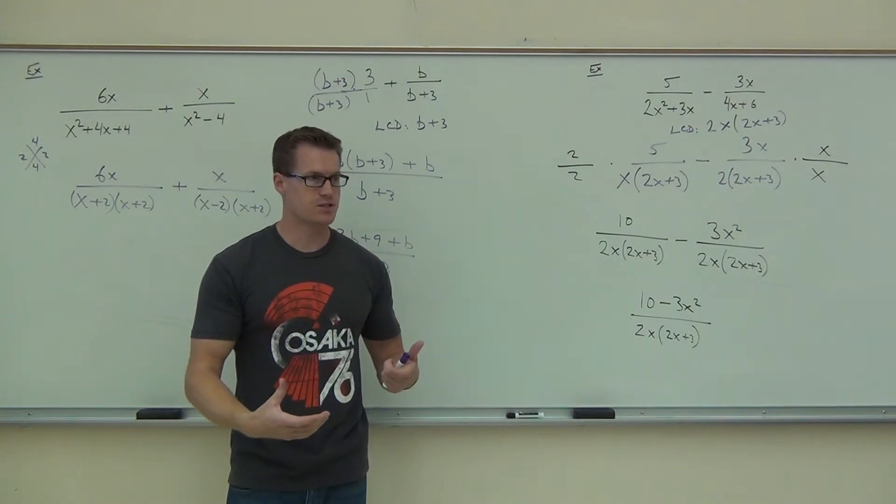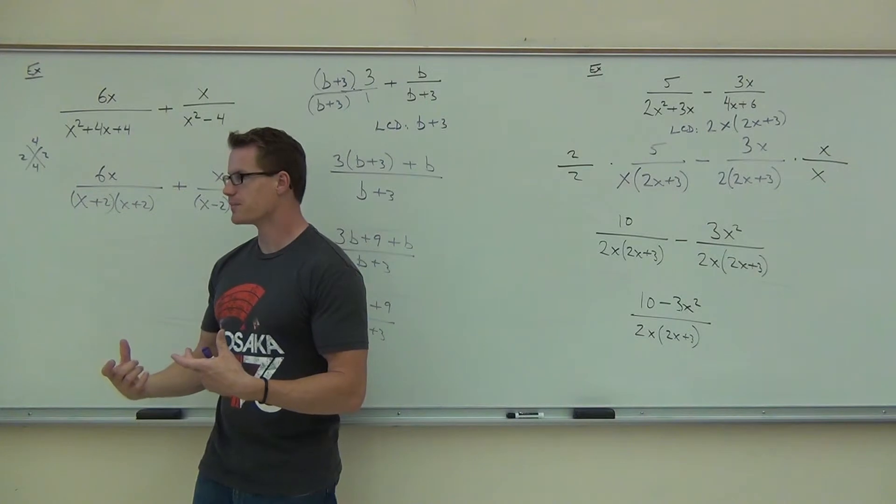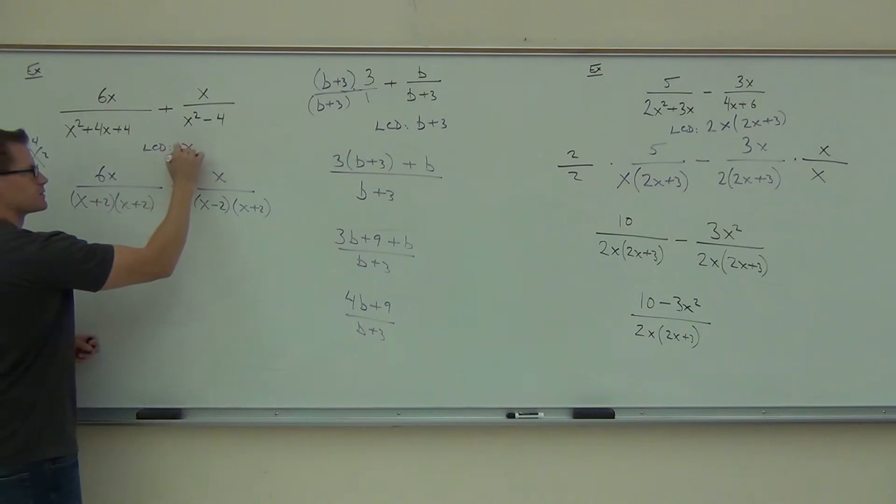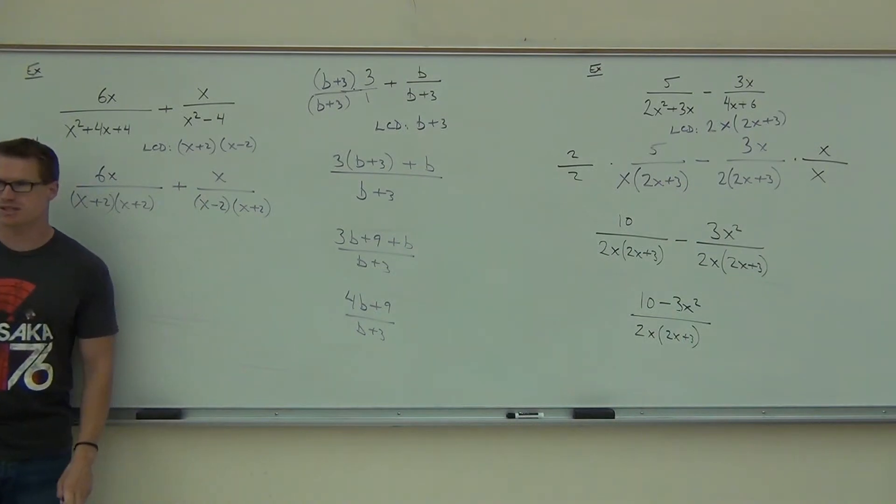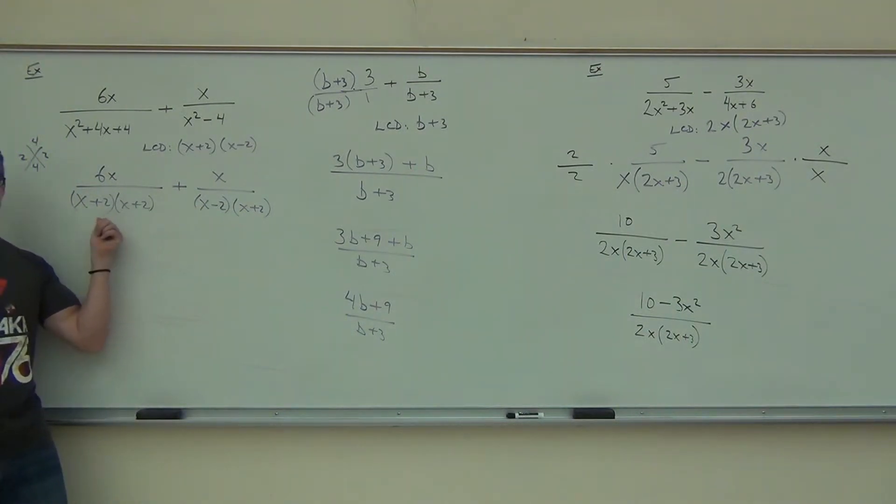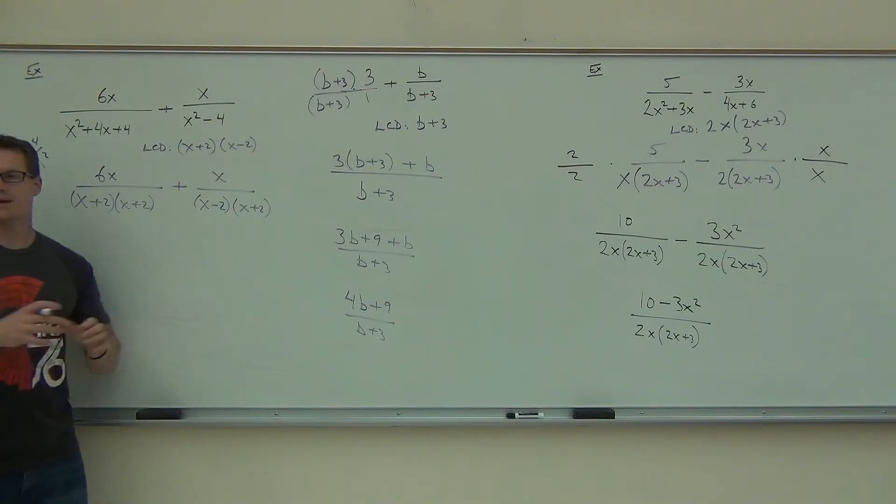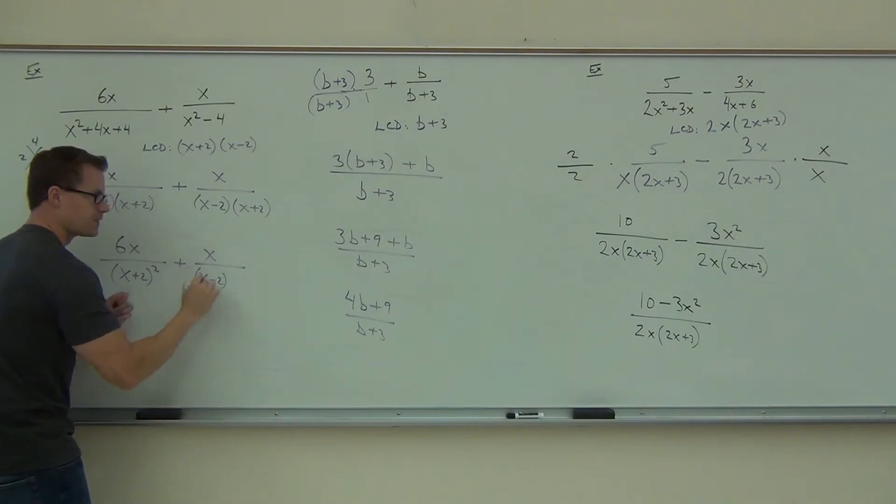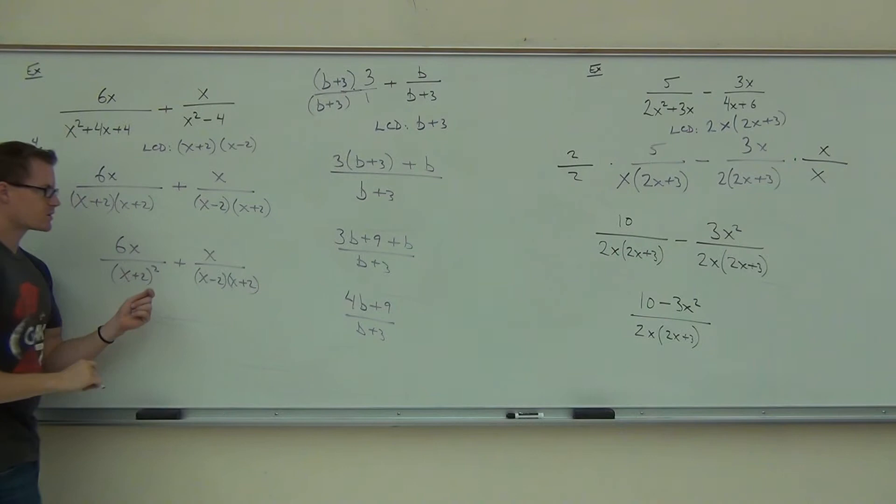Next we get to find the LCD. Our LCD is going to be every different factor that we have up there and the largest power that occurs. But I mentioned one thing to you. This is why we're doing this example. Before you find the LCD, you have to make the denominators as concise as possible. You have to make them as good as possible. So the problem here is that if you just do this, you don't quite have the LCD yet. And the reason why is because, can you write this differently? Yes. How could you write it? That's going to make a difference in your LCD because that's a larger power. So here we'll do that.